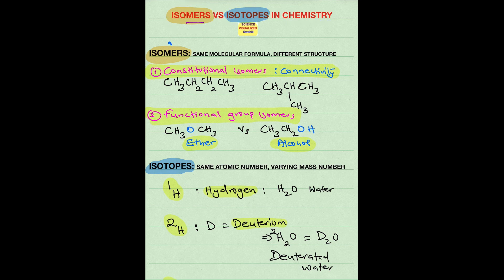What are isomers? Isomers are compounds that contain the same molecular formula but different structures. There are two types of isomers.